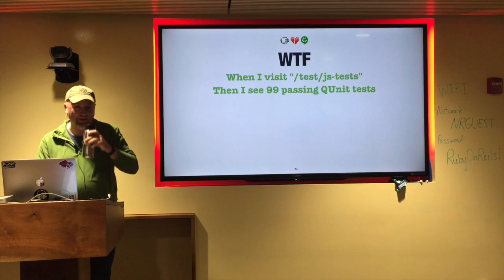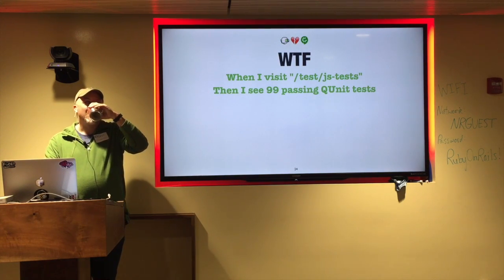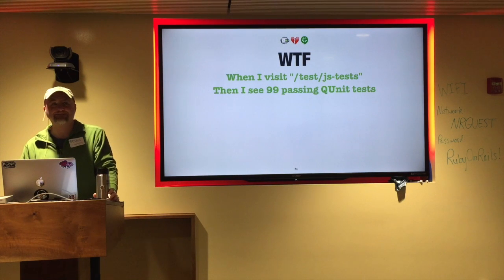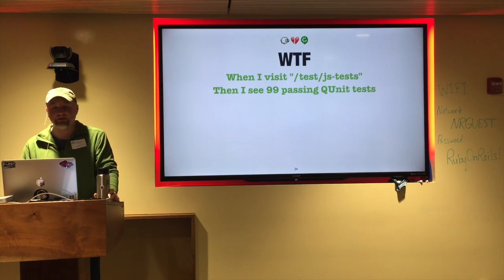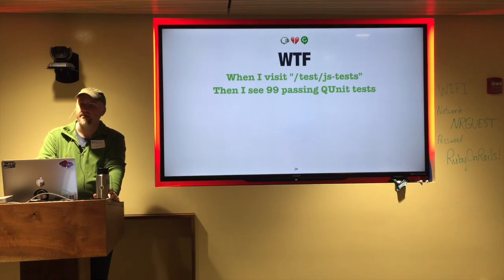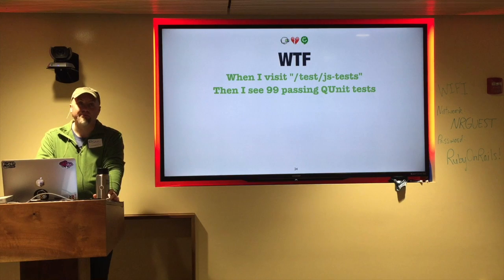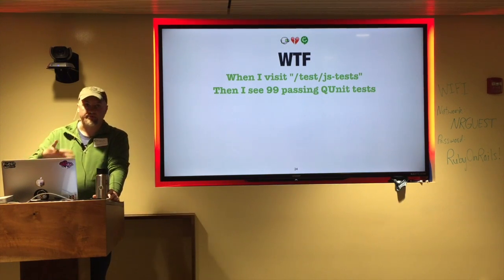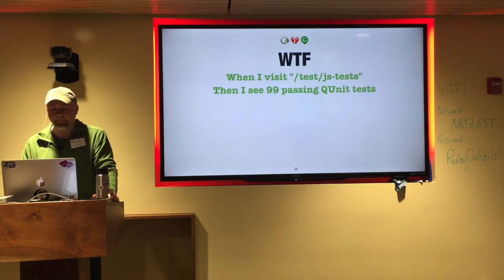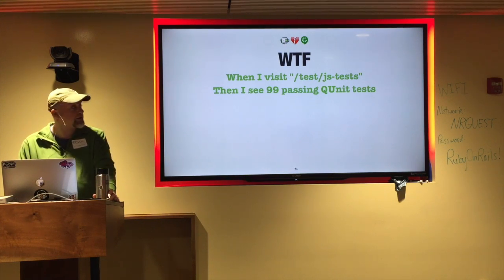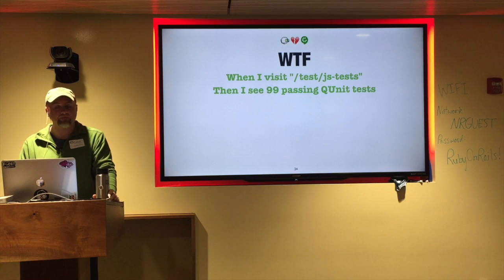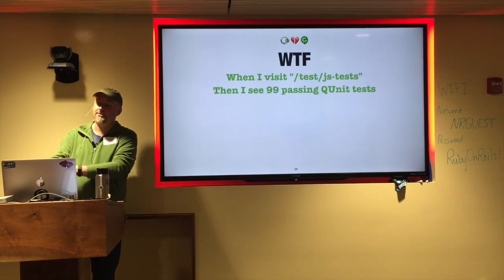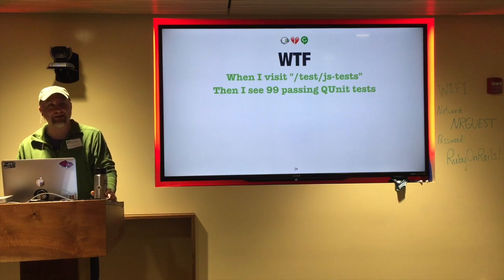I'm going to show you a Cucumber scenario that I helped write in a real-life code base. What this thing did was visit a route that was only defined and only available in the test environment. That route rendered a static view that in turn required a JavaScript file, and that JavaScript file contained all of the unit tests for our front-end helper functions. Cucumber would drive the browser to look at that, the browser would interpret all the JavaScript and tell us whether all our tests passed or not. That number — 99 — actually started off at somewhere around 40 or 50, but we kept adding more JavaScript tests, so every time we did that, we had to go in and update this Cucumber scenario with the right number.